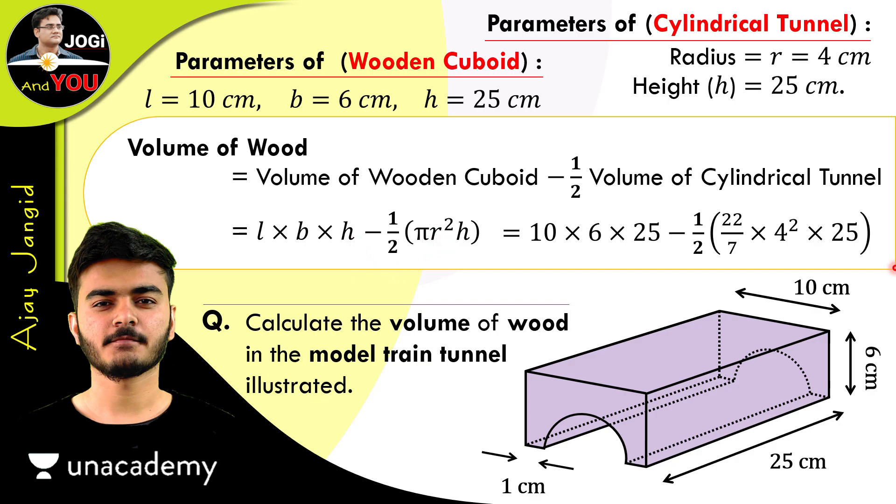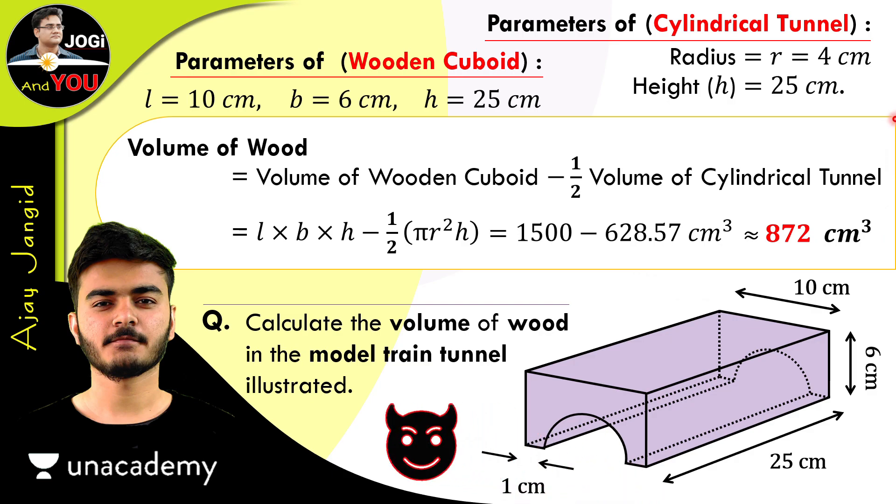So after calculating, what do we get here? We get 1500 minus 628.53 centimeter cube. Centimeter cube is the SI unit of volume, so that's why we use this here. And we use centimeter because all the measurements are in centimeters. So look at here: 1500 minus this is almost 872 cm³. This value is an approximate value because we didn't consider this 0.57. You can calculate it in decimals if you want to.